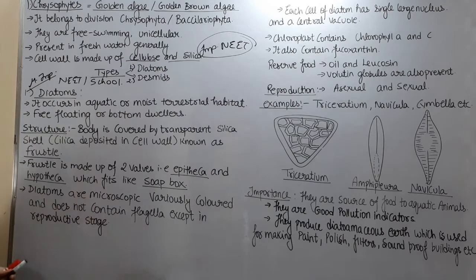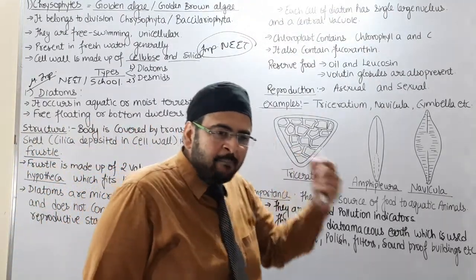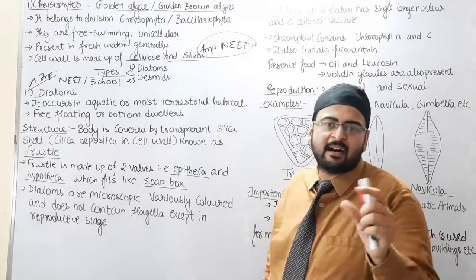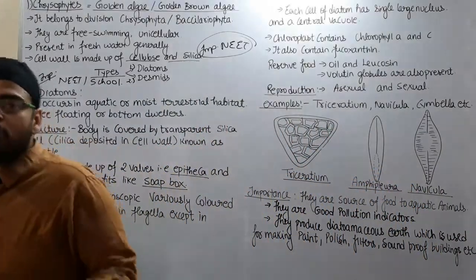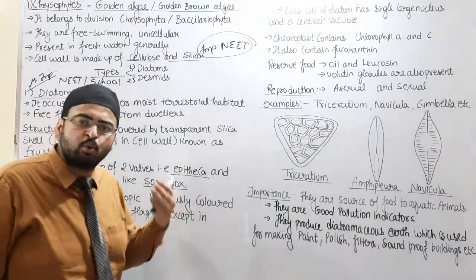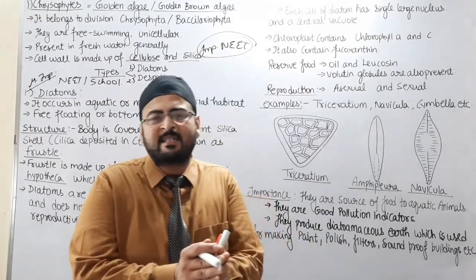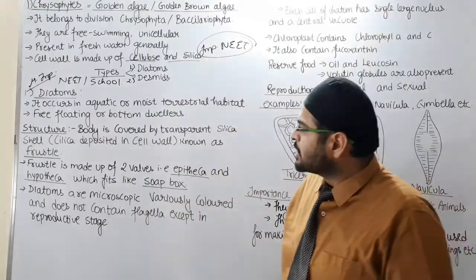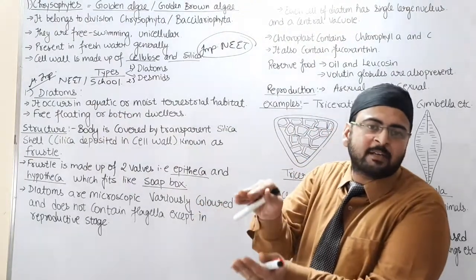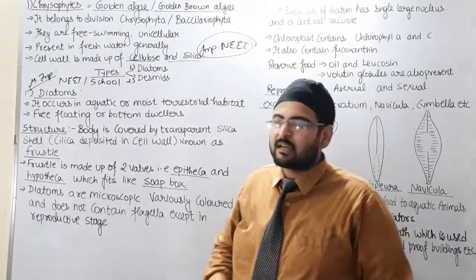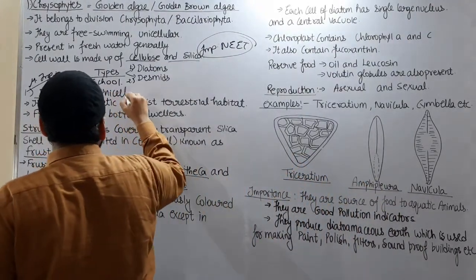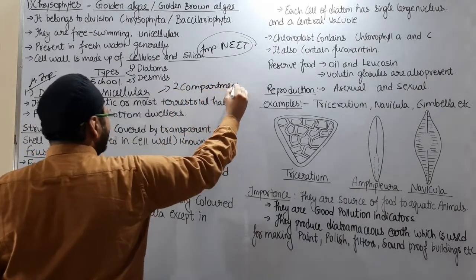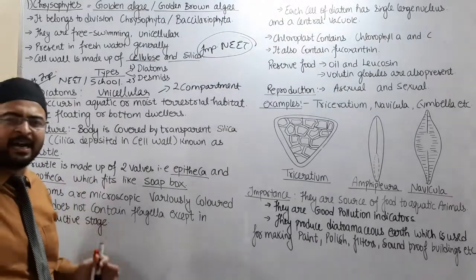The word Diatom — यहाँ पर इसी के नाम से ही इसका मतलब समझ में आ रहा है. Diatom means 'two' and 'atom' means a cut structure. तो इसका जो structure है, unicellular होने के बावजूद भी two parts में, two compartments में divided लगता है, इसीलिए इसका नाम रखा Diatom. Diatom का मतलब है two compartments in one structure — ये unicellular living organism है but इसका structure two compartments में divided नजर आता है.